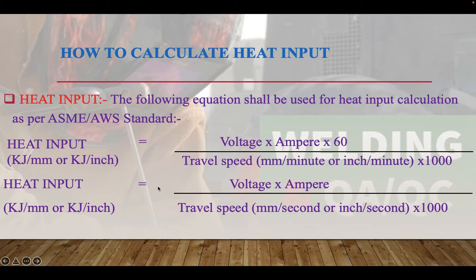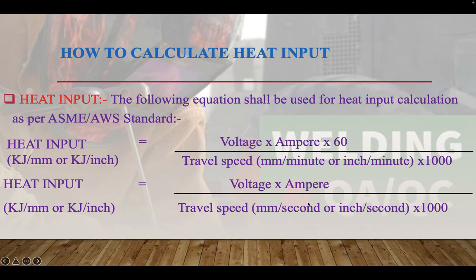In some competitive examinations like the CWI exam and IIW, travel speed is given in mm per second, so do not be confused about when to use the factor of 60.